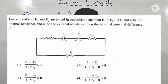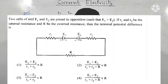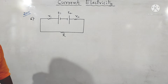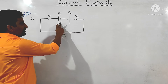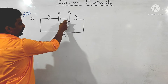Next question from 2015: two cells of EMF e1 and e2 are joined in opposition such that e1 is greater than e2. If r1 and r2 are the internal resistances and r is the external resistance, what is the terminal potential difference?